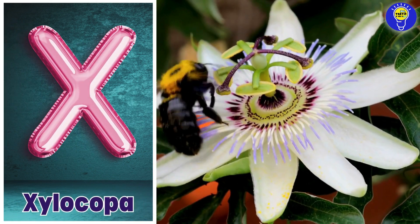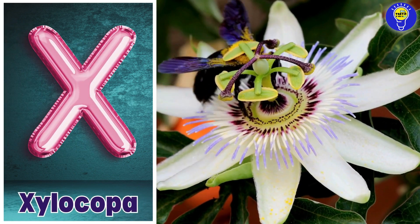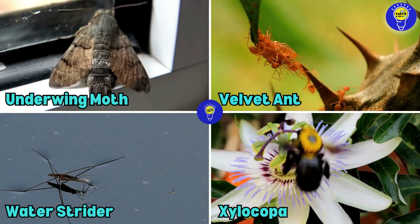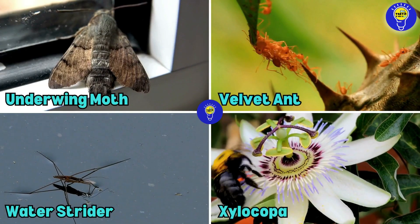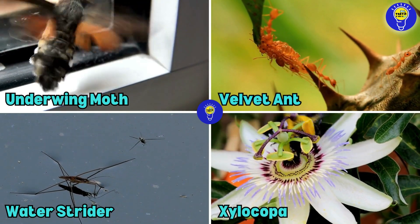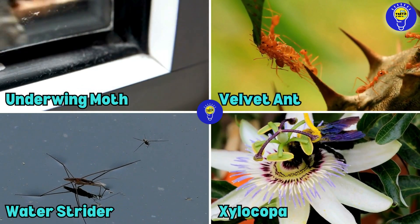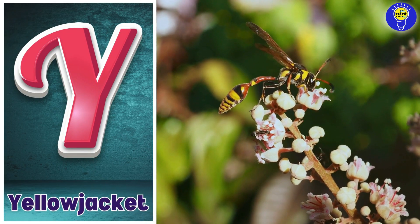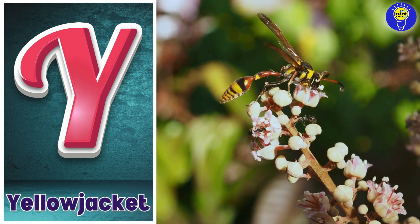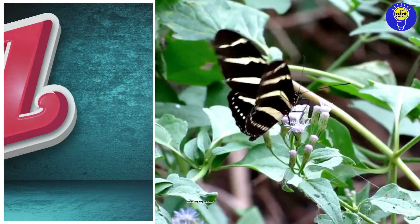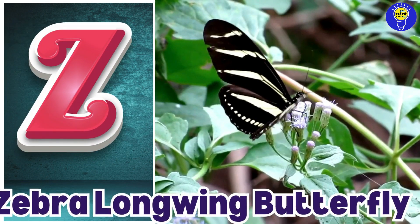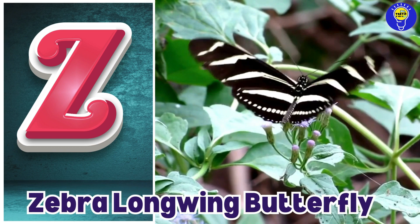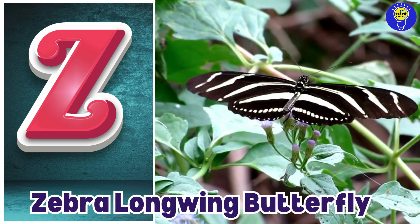X is for xylocopa. Y is for yellow jacket. Z is for zebra longwing butterfly.